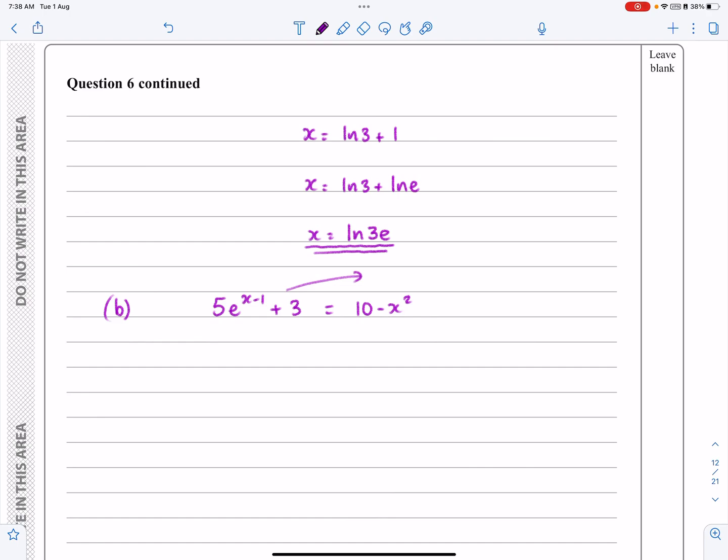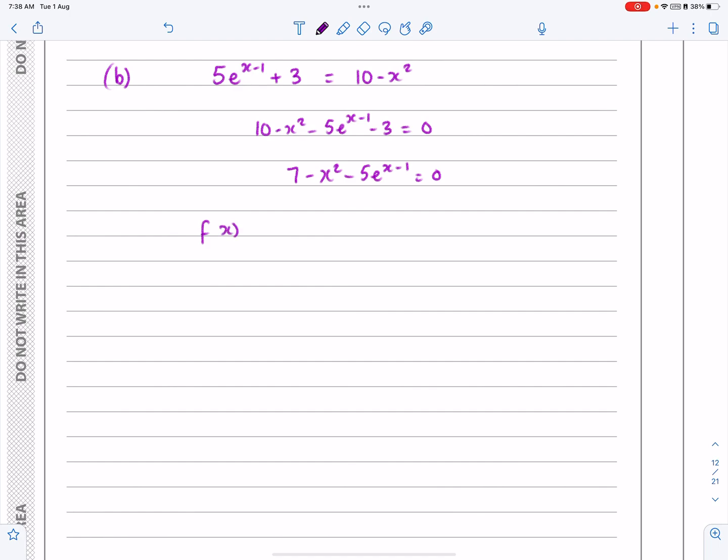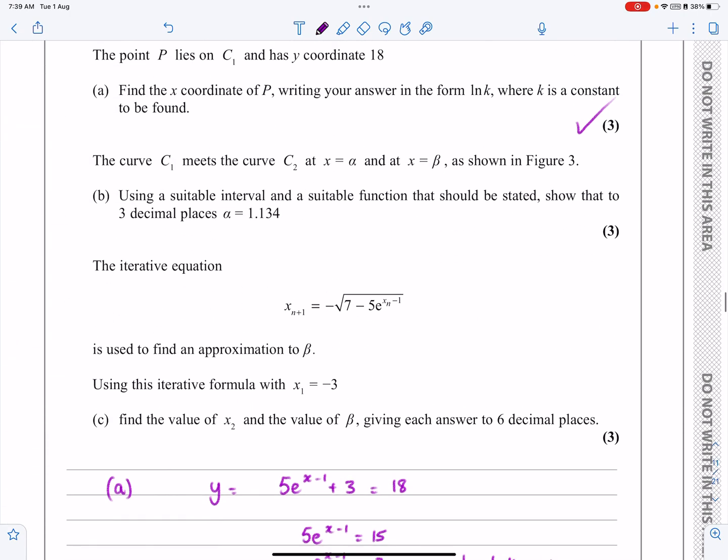So all we need to do is to rearrange all this. I'm going to take that over to the other side because my function f(x) should be equal to zero when I'm using the numerical methods. So if I do that, I'm going to get 10 - x² - 5e^(x-1) - 3 equals naught. So I'm just taking all of that over to that side there and then just tidy that up. That's 7 - x² - 5e^(x-1) equals naught. So the f(x) that I'll be using for my numerical methods is that function. And it did say in the question that they wanted me to state the function that I'm going to be using.